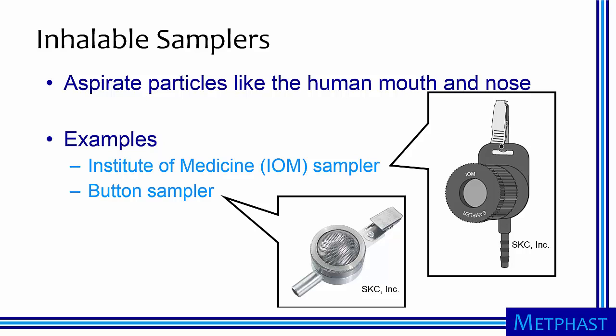Inhalable samplers are designed to aspirate particles like the human mouth and nose. Examples of inhalable samplers are the IOM sampler, which has an opening a bit like a mouth with the filter partially exposed, and the button sampler, which has a perforated metal sphere that provides more protection for the filter.